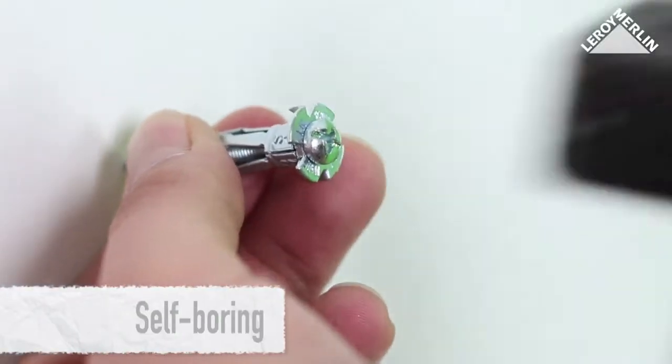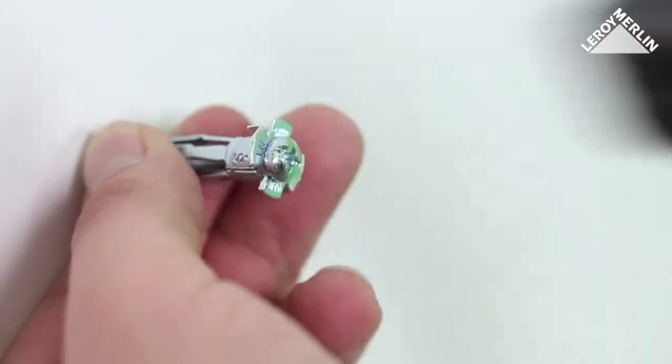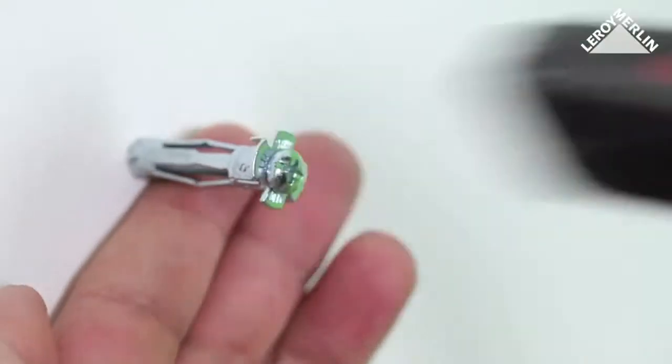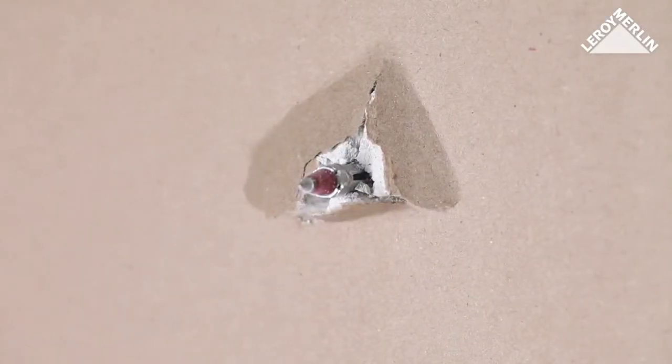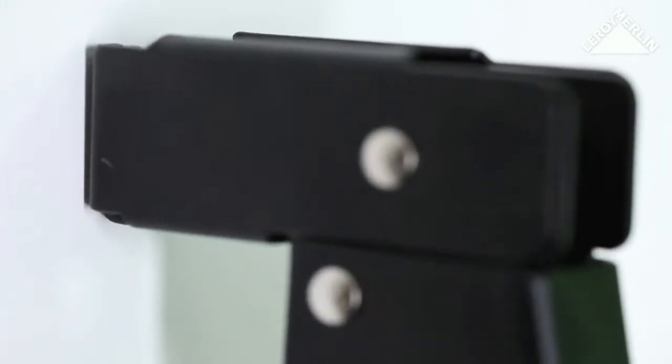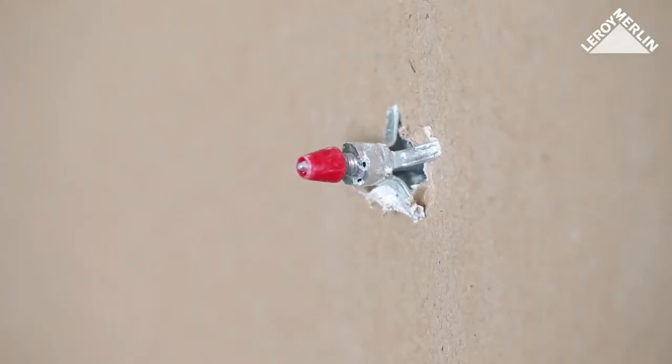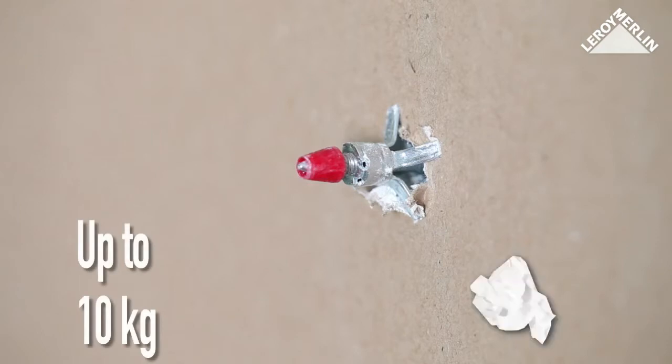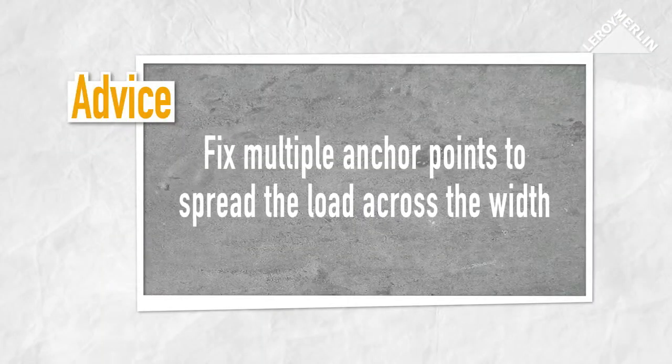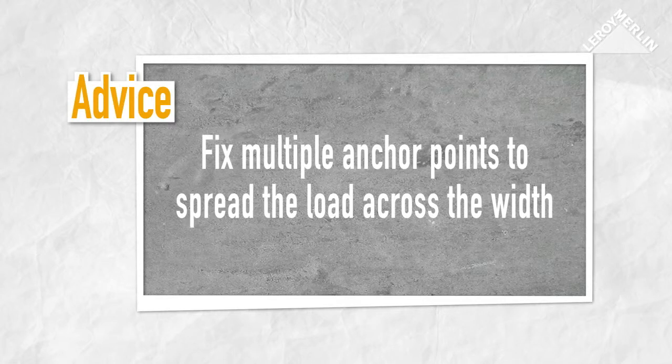Tap the head of the screw plug to drive it into the plasterboard. Once the collar on the plug reaches the board, open up the plug with the anchor tool. This anchor system will support 10 kg of vertical load. To support heavier weights, fix multiple anchor points across the width.